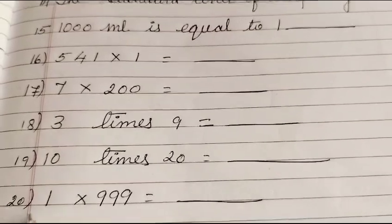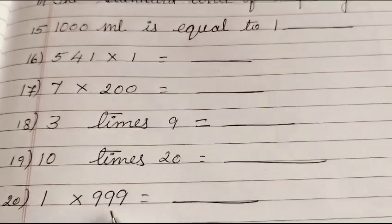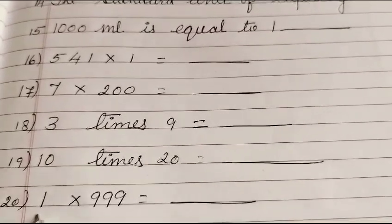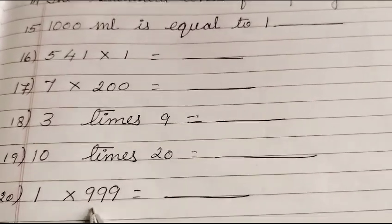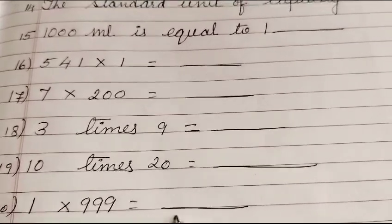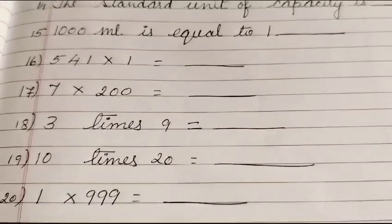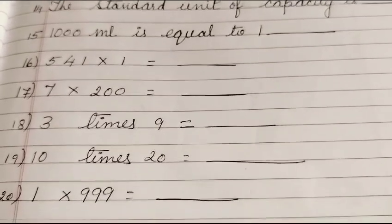Our last question is: 1 multiply by 999 is dash. Write down these questions in your fair notebook.